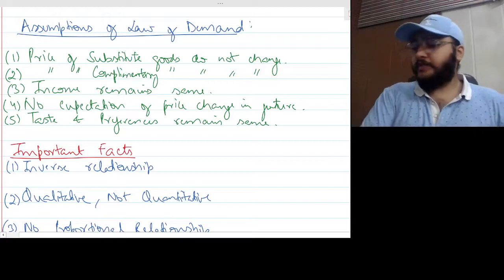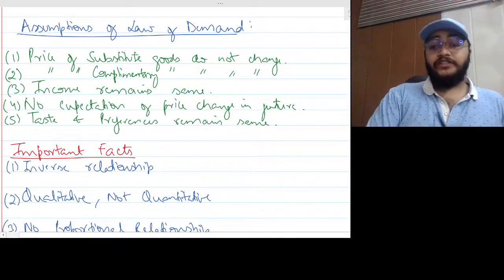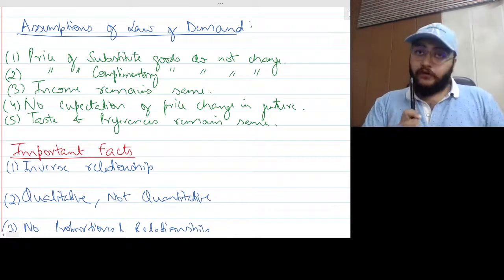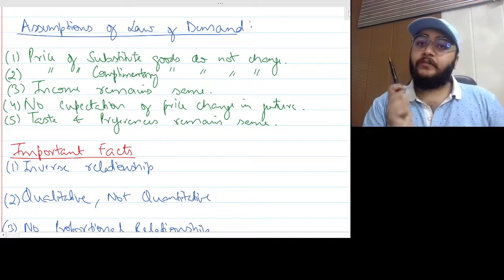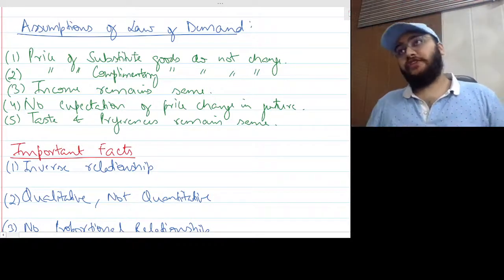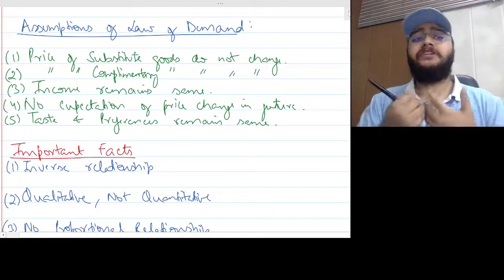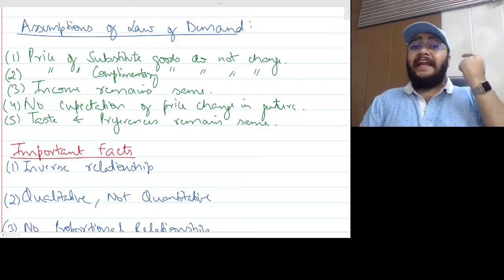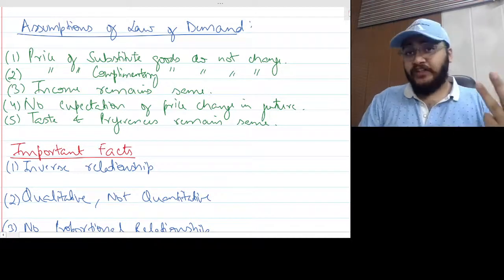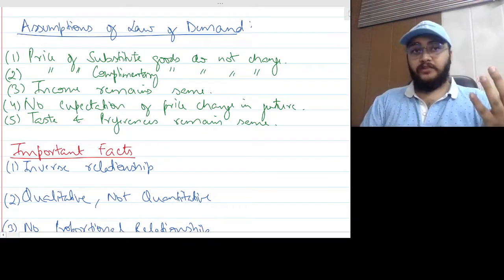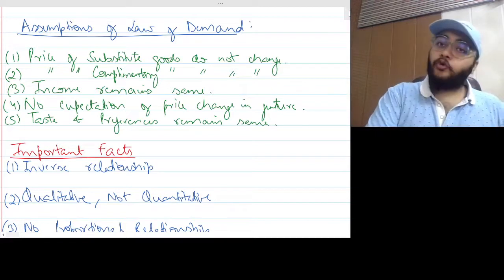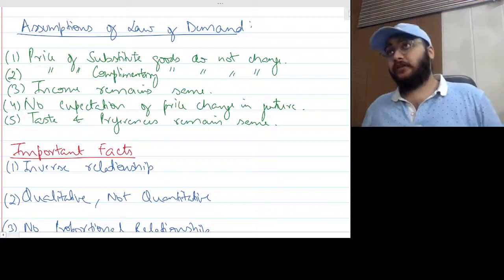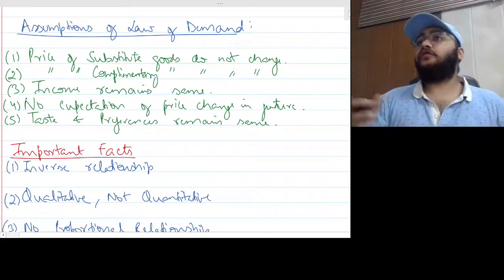The next thing is assumptions of law of demand. Whenever we study the law of demand, we always look at the price and quantity demanded relationship, keeping the rest of the factors constant. Those are called assumptions. Price of substitute goods does not change. Price of complementary goods does not change. Income of the consumer remains the same. There is no expectation of price change in the future. And taste and preferences remain the same.